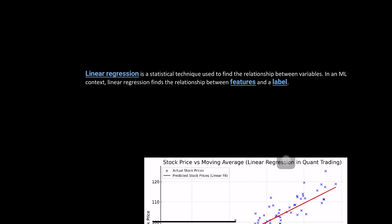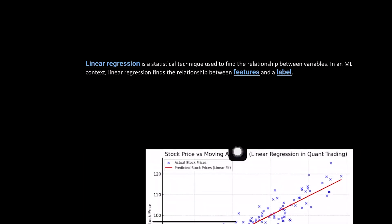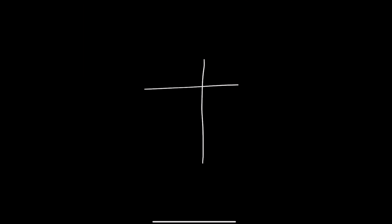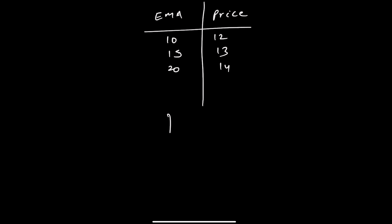Now let's understand what linear regression is. Linear regression is a statistical technique used to find the relationship between variables. For example, in a table with one column for exponential moving average (EMA) and one for price, the EMA is the independent variable and the price is the dependent variable. When there is a linear relationship between two variables, we can represent it as a straight line.